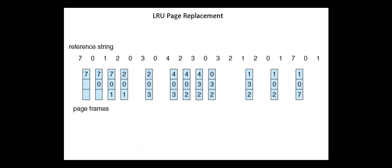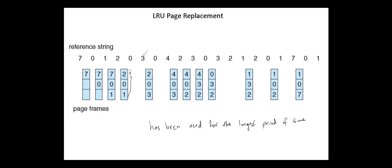Most page replacement algorithms try to approximate optimal page replacement. Next, least recently used page replacement. According to this algorithm, we select as a victim the page that has not been used for the longest period of time. For this reference string, after bringing these pages, the next page is 2. The page that has not been used for the longest period of time among pages 7, 0, and 1 is 7, so we select it as a victim. Zero is there. Next, 3 — the page that has not been used for the longest period of time is 1, so 3 is brought in.